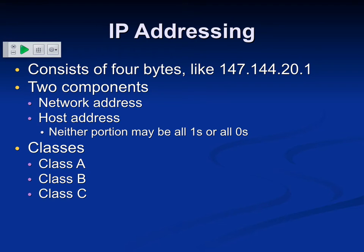IP version 4 is the predominant protocol in use on the internet. You have 32-bit addresses, and the 32 bits are broken into four decimal numbers. Base 10 is problematic - a number like 147.144 is a base 10 representation of 8 bits of binary, which is why it can't get bigger than 255, because 256 is a 9-bit number. The dots in the middle are separators for four fields, each of which has 8 bits.